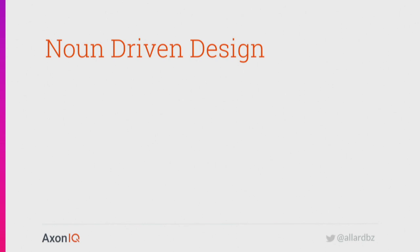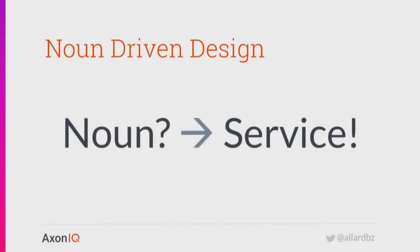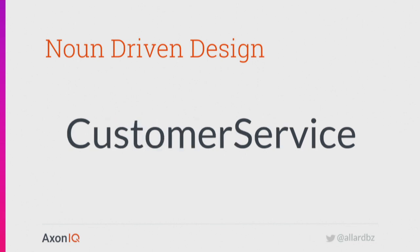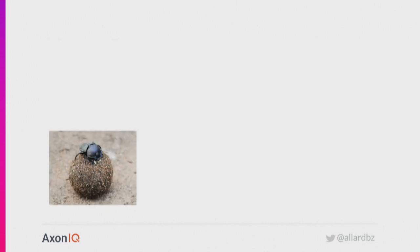Noun-driven design — note the sarcasm — is a great means of finding where your service boundaries are. It's a very simple methodology: look for nouns in descriptions, and every time you find a noun, that's a service. If there's a verb, it's an operation on that service. Unfortunately, that's what happens in reality. You get stuff like order service, customer service, product service, inventory service, et cetera. This way of working with microservices doesn't really help. We use the practices that gave us the big ball of mud and we're increasing the number of deployment units using those same principles. What do you get? Distributed piles of shit.